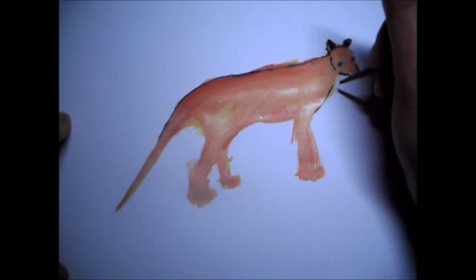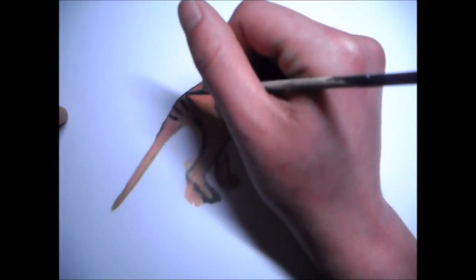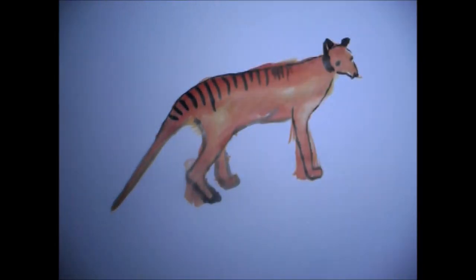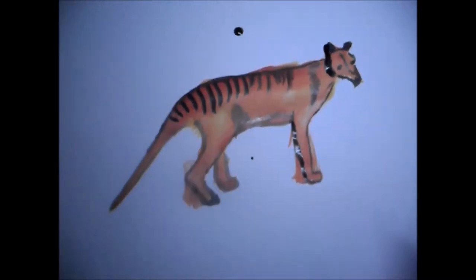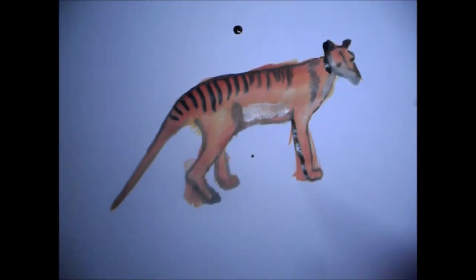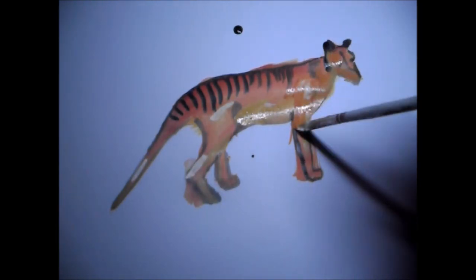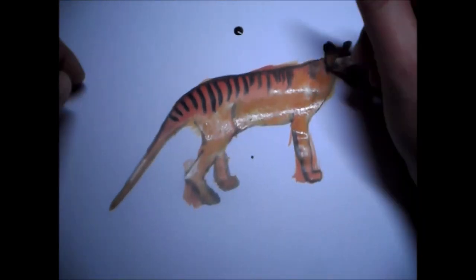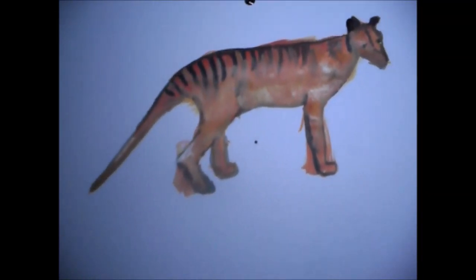From excessive hunting and destruction of their habitat and introduced diseases, their numbers quickly dwindled. Two months after they were granted protected status, the last one died in a zoo in Hobart. His name was Benjamin. It died from exposure on the 7th of September, 1936. It seems like what's happened to the Tasmanian Tigers is a recurring thing to many species all over the world.